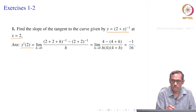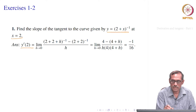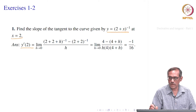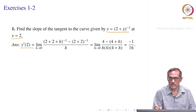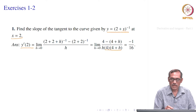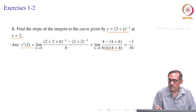We write y prime of 2 — we do not know whether it exists or not, but if it exists it will equal this limit. So it is f of (2 plus h), that is (2 plus 2 plus h) to the power minus 1, minus (2 plus x equal to 2) to the power minus 1, divided by h. That gives 1 divided by (4 plus h). Subtracting, the numerator becomes 4 minus (4 plus h) and the denominator is 4 times (4 plus h) times h. The top gives 4 minus 4 cancels, leaving minus h; that h cancels, and as h goes to 0 we get minus 1 divided by 16.